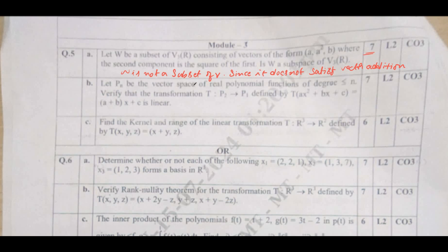Let Pₙ be the vector space of real polynomials of degree less than or equal to n. Verify that the transformation T: P₂ → P₁ defined by T(ax² + bx + c) = (a + b)x + c is linear. This type of problem has been solved in previous videos. It is shown that T is linear from P₂ to P₁. It carries 7 marks.